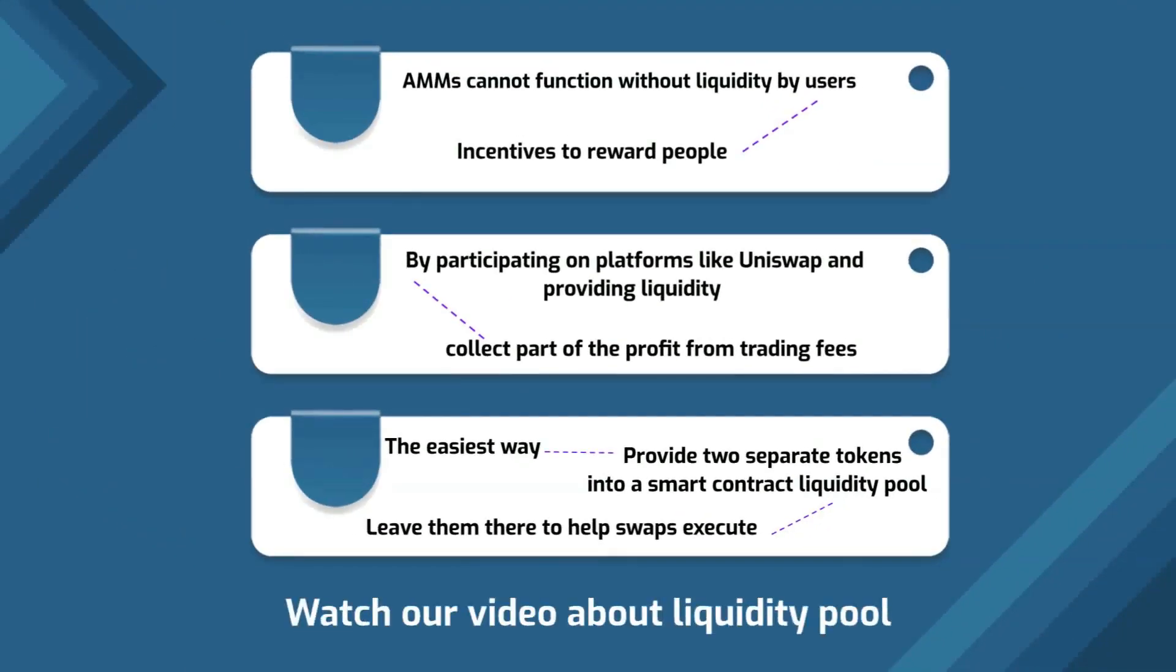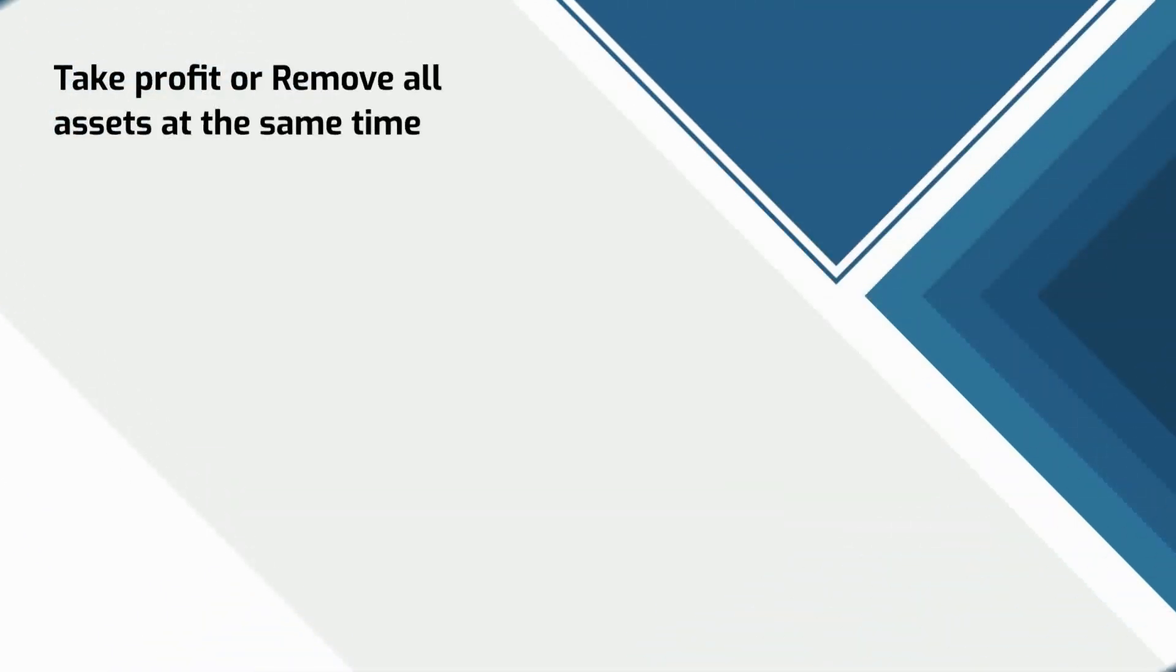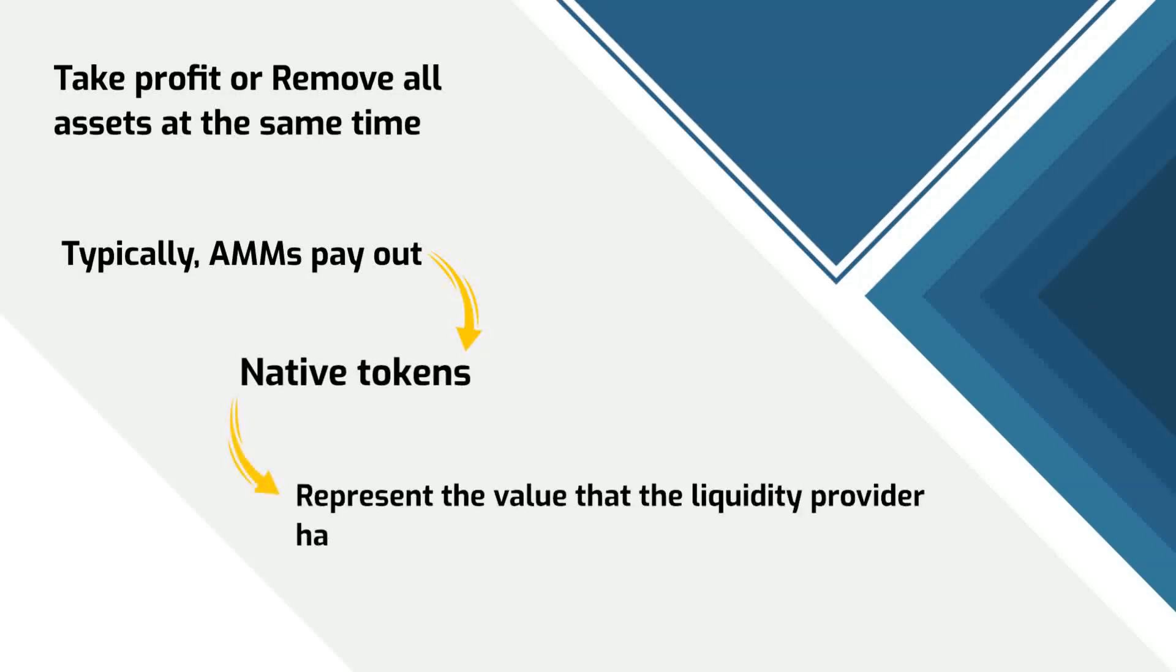Be sure to watch our video about liquidity pools to not miss anything out. Users can either take profit and leave their assets in the liquidity pool or remove all assets at the same time. Typically, automated market makers pay out with their own native token which is created to represent the value that the liquidity provider has added to reward them for their assistance.